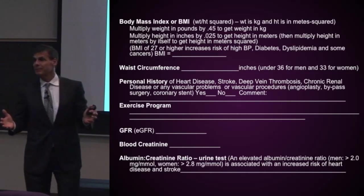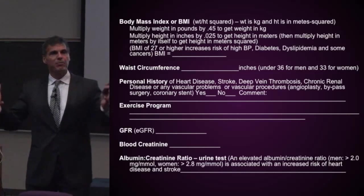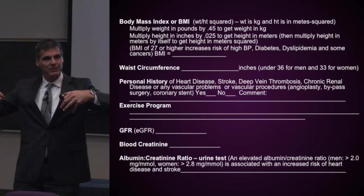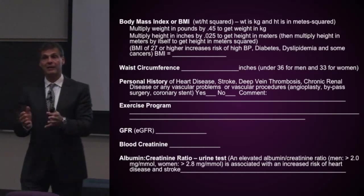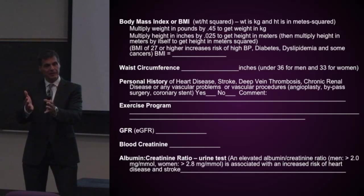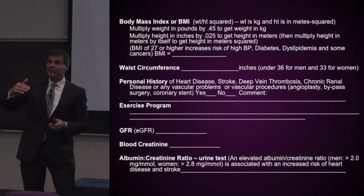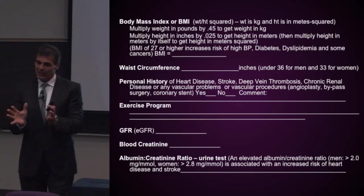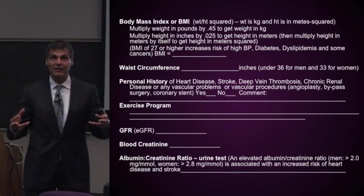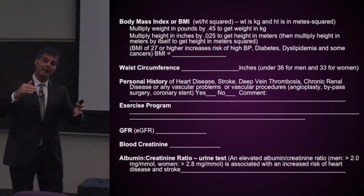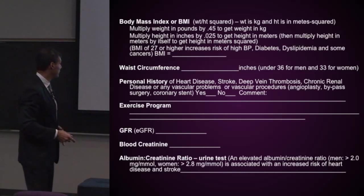Creatinine is something different. Each day your body breaks down a predictable amount of muscle protein in its normal turnover function, and one of the end products of muscle breakdown is creatinine. Creatinine gets into the bloodstream and the kidneys filter it into the urine. If creatinine is building up in the bloodstream, it means the kidneys are not able to filter it — you have a kidney problem. Blood creatinine levels are one of the best indicators of kidney function.